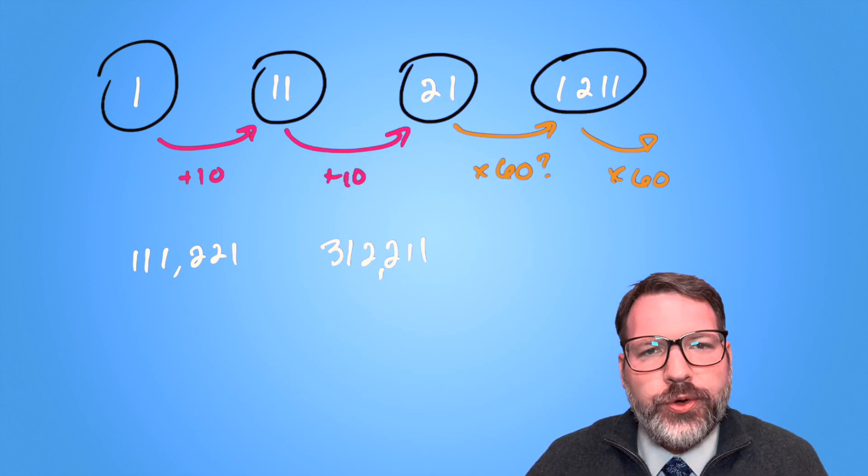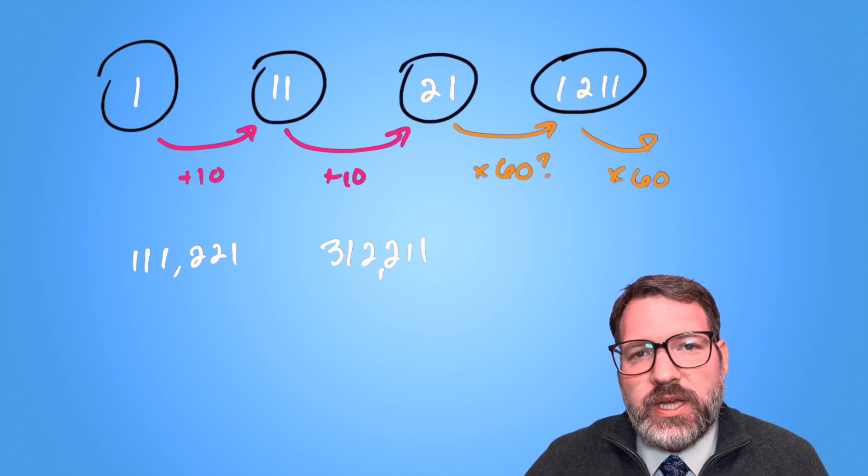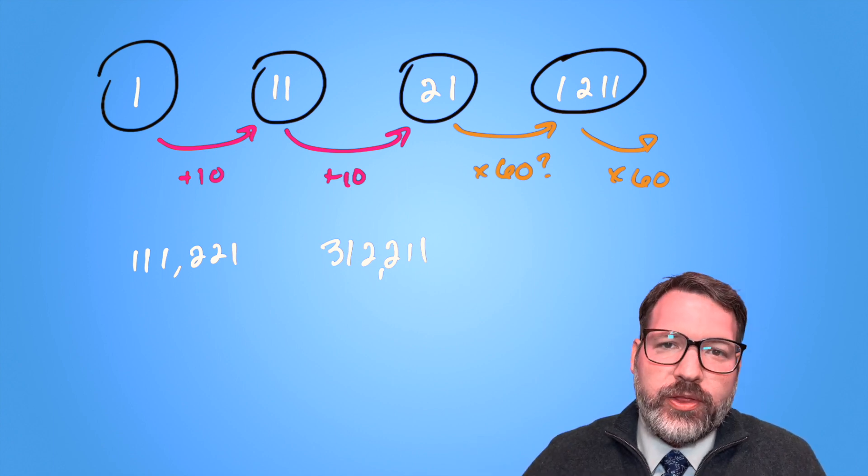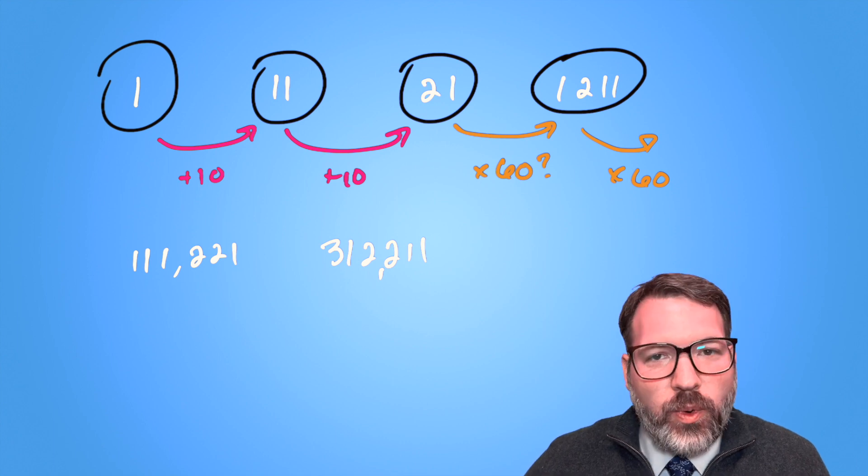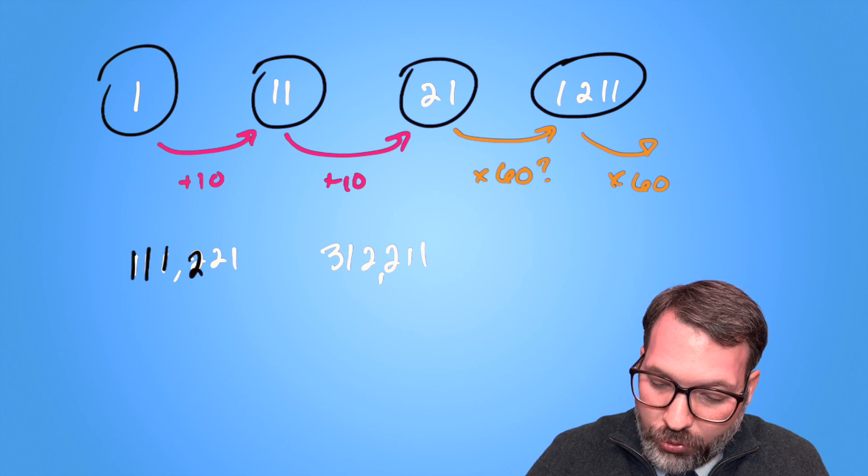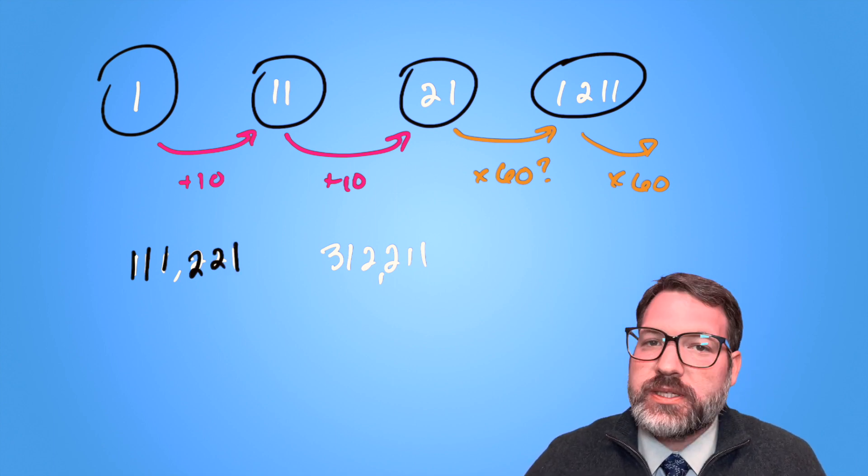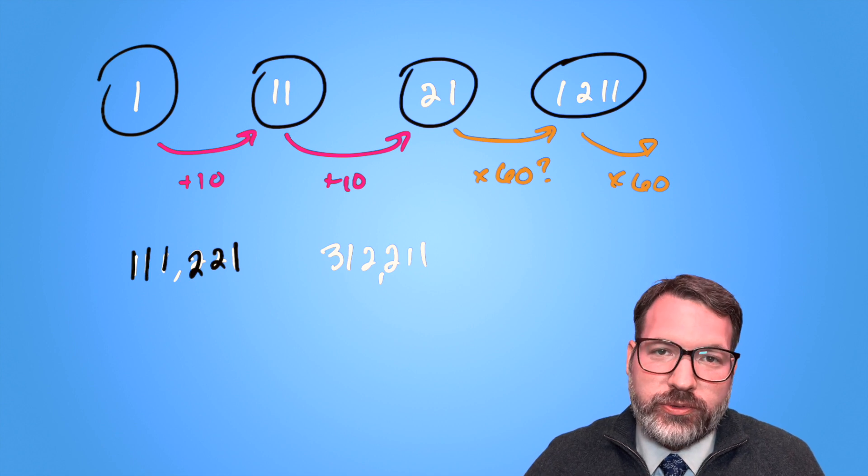And then we have 1, 2, 1, 1. Each subsequent term in this sequence is actually describing the previous term. So when I look at 1,211, what do I have? 1, 1, 1, 2, and 2, 1s. And that's why the next term in the sequence is 111,221.